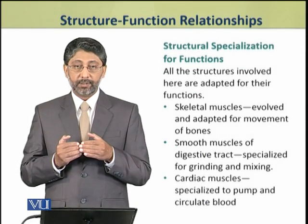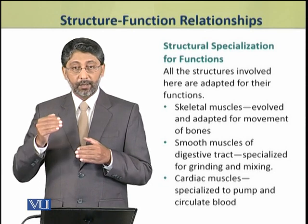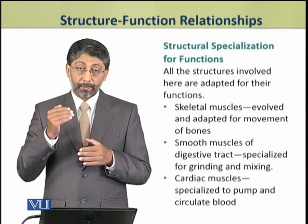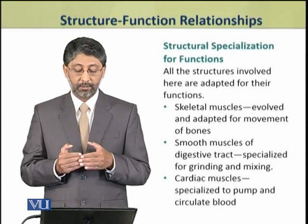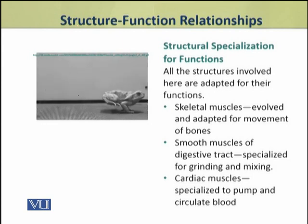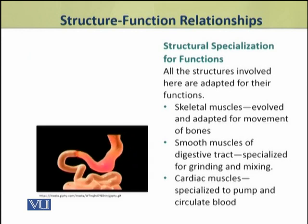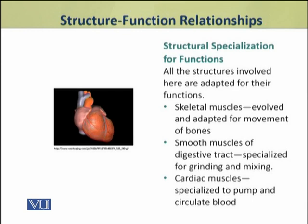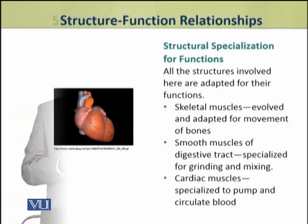In all this process, we can see that the structures of muscles have specializations for their functions. For example, the skeletal muscles are evolved and adapted for movement of bones. The smooth muscles of the digestive tract are specialized for grinding and mixing of the food contents. Similarly, the cardiac muscles are specialized to pump and circulate blood.